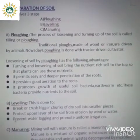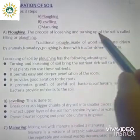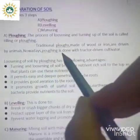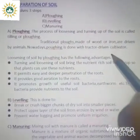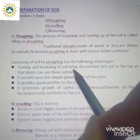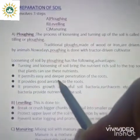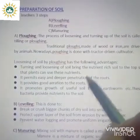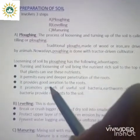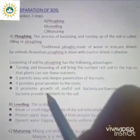The preparation of soil involves three steps: plowing, leveling and manuring. Plowing is the process of loosening and turning up the soil, also called tilling. Traditional plows made of wood or iron are driven by animals, but nowadays plowing is done with a tractor-driven cultivator. Turning and loosening of soil brings nutrient-rich soil to the top so plants can use these nutrients, allows easy and deeper penetration of roots, and promotes growth of useful soil bacteria and earthworms that provide nutrients to the soil.